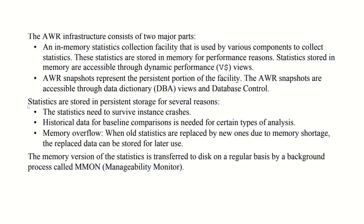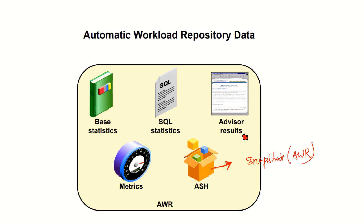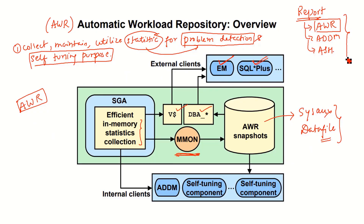The Automatic Workload Repository data contains several types of data. If you want to capture an ASH report — ASH means Active Session History — you can capture it from the AWR snapshots as well. This active session history data is captured from memory. Apart from that, there are base statistics, advisory results, and ADDM reports also available under this AWR report.